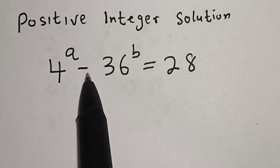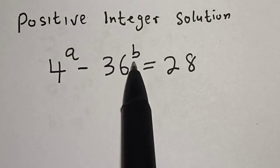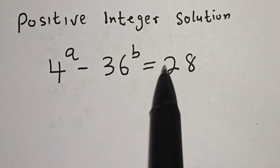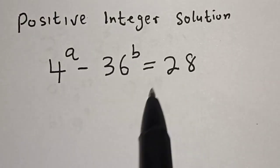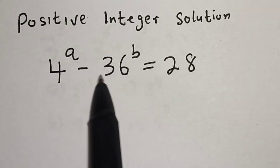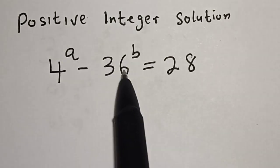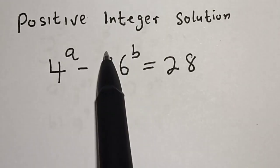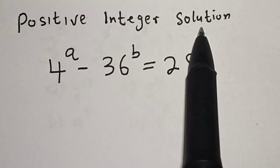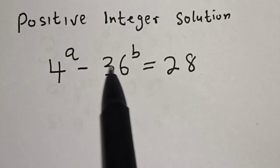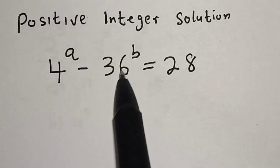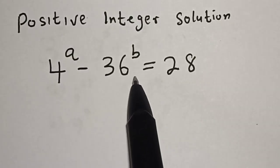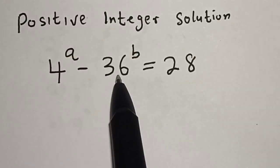4 to the power of a minus 36 to the power of b is equal to 28. Hi everyone, welcome to my class. In this class we want to find the positive integer solution of a and b from this given equation.